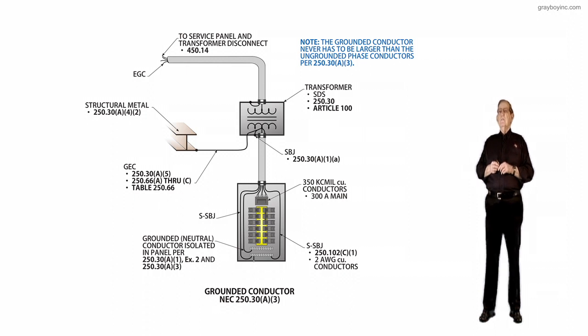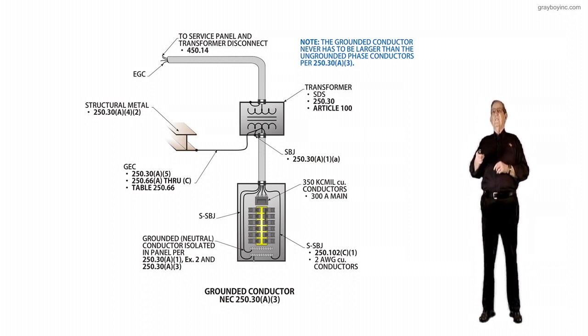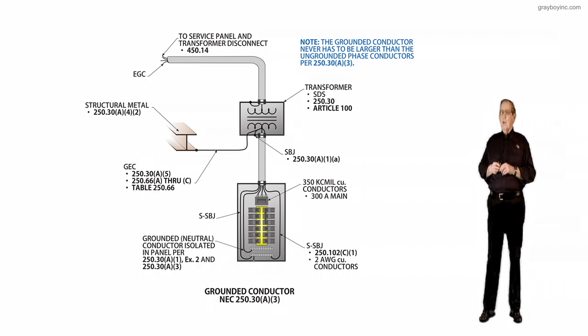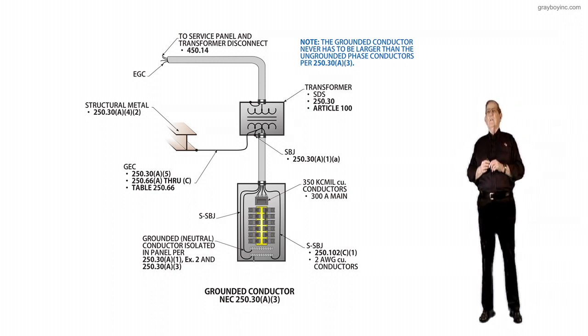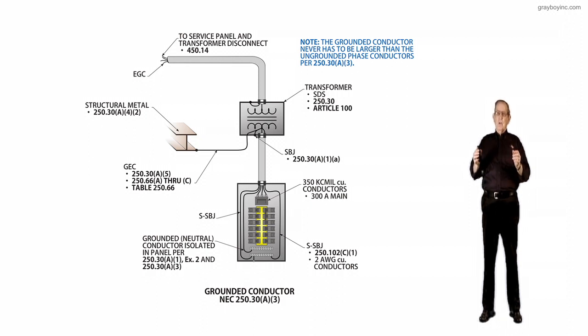And then the note, we want you to remember this note, because the grounded conductor never has to be larger than the ungrounded conductors, as called out now in 250.30A3. And then the reminder is that the grounded conductor to carry fault current or short in cases of fault current has to be at least sized from table 250.102C1, and then calculate it as a neutral carrying conductor by 220.61, and use the larger of the two. And that pretty well summarizes what this new sentence is trying to point out in the purpose of change.